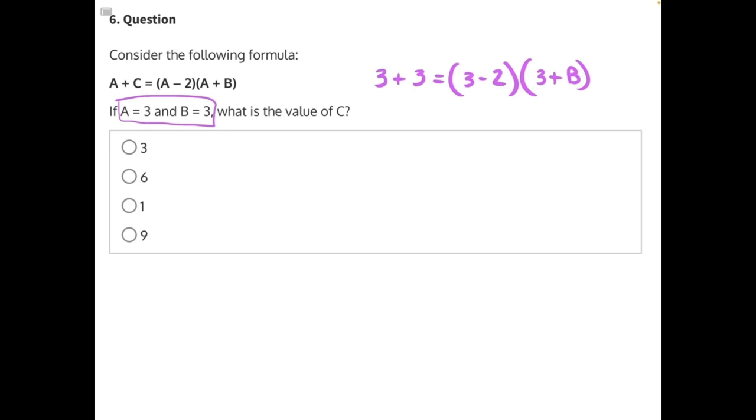Now we can begin to simplify. 3 plus 3 will give us 6 equals. 3 minus 2 will give us 1, and then times 3 plus B.